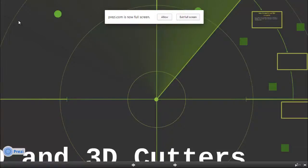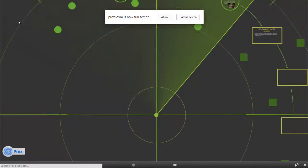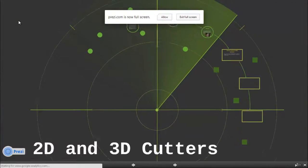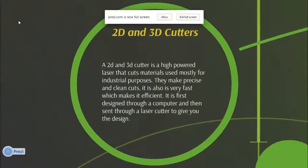Hello and today I'm going to be showing you 2D and 3D cutters and just how they work and what they are. They're basically a high powered laser that cuts through most materials such as thin metals, woods, and plastics.